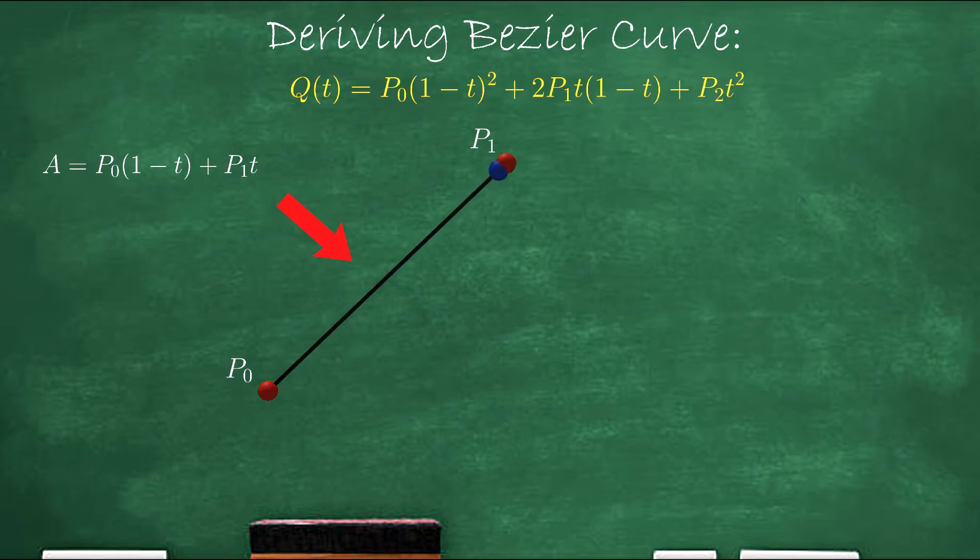Now, just like for any curve, we need at least three points. So let's introduce a third point that we'll call point two. Now let's take a look at what happens when we lerp from point one to point two. We'll call this interpolation B.